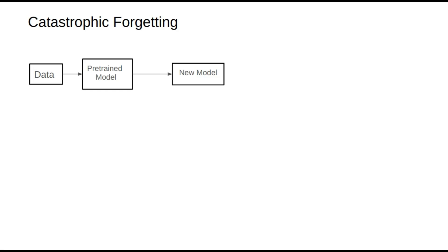As illustrated here, we have a pre-trained model built on vast amounts of data, making it a large model with a range of abilities that meet certain standards. Now, let's say we want to enhance specific abilities within the model and undertake additional training. After this secondary training, the targeted abilities may improve, but at the cost of potentially weakening other abilities.